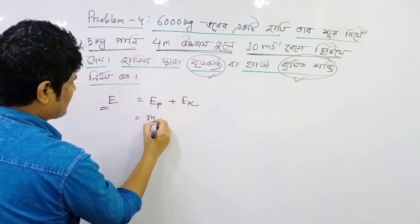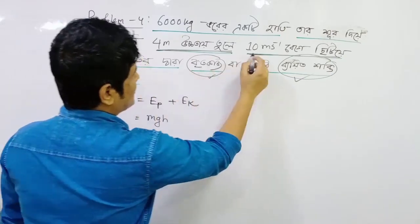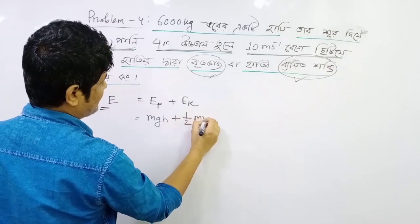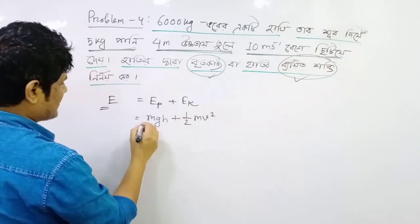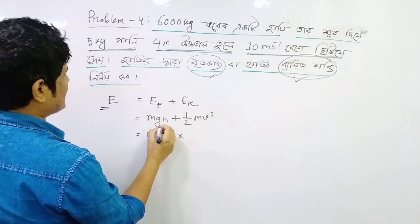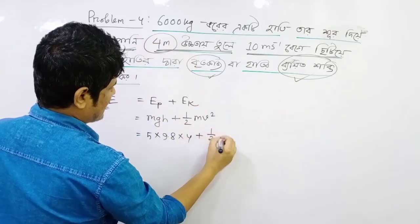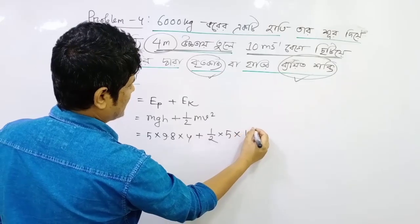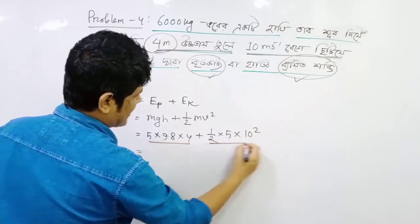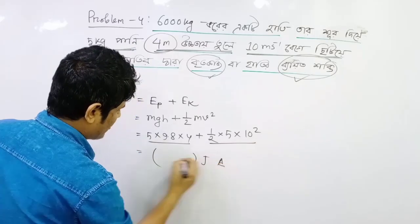That means the minimum: 2mgh, and we will get 10 meters per second. So we will get half m v squared. So we will get 5 into g — where g is 9.8 — h is 4 meters, plus half into 5 into 10 squared. So we will get the answer from the calculator.